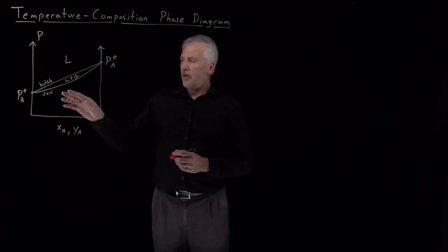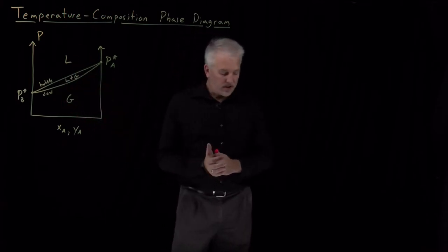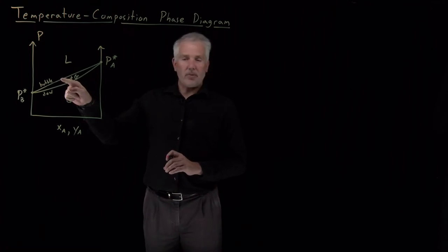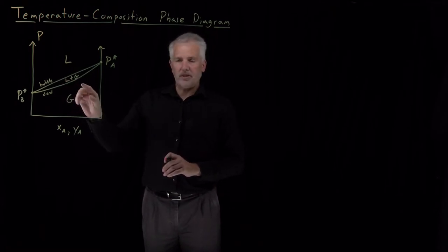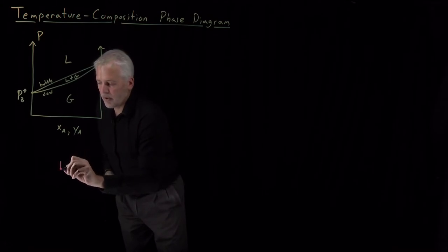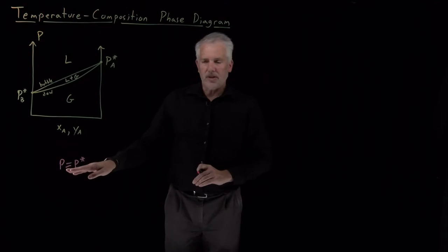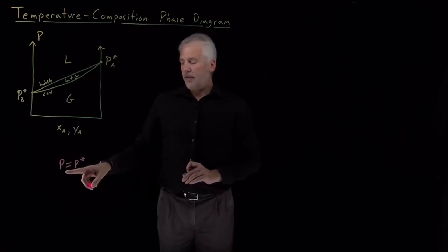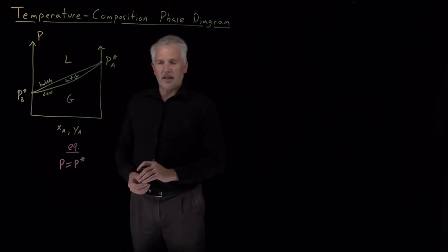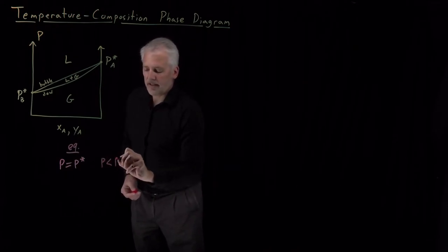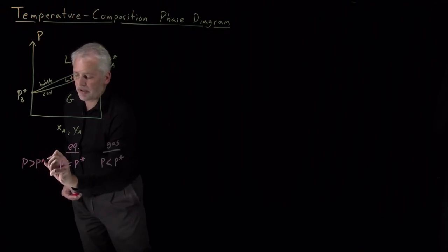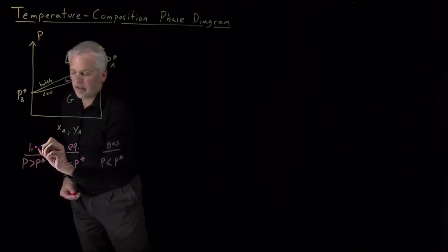We need to think about how this diagram would look in temperature coordinates in addition to pressure coordinates. There is a connection between the pressure at which a liquid evaporates and becomes a gas, and the temperature at which it would do the same thing. For a single-component system, when the pressure is exactly equal to the vapor pressure P*, I have equilibrium between two phases — the gas and the liquid. If the pressure is less than the vapor pressure, the system will have evaporated into the gas phase. If the pressure is greater than the vapor pressure, I'll have liquid phase.